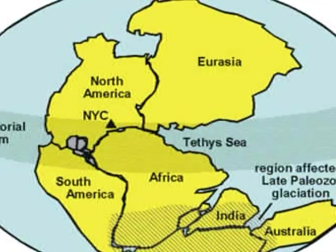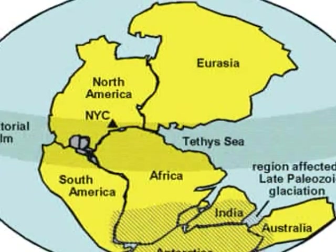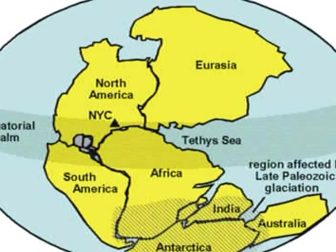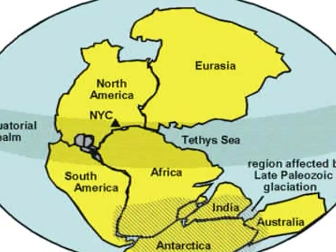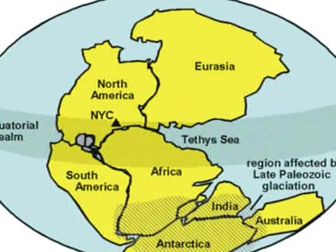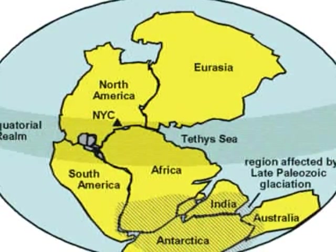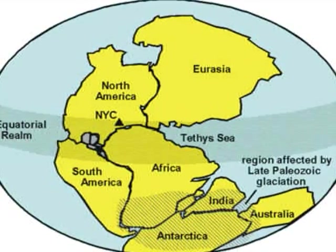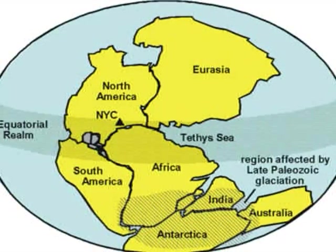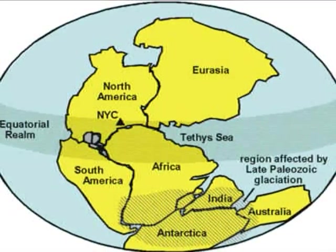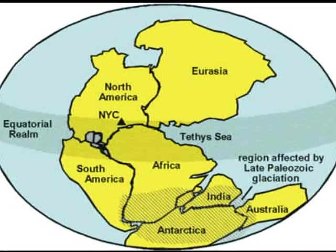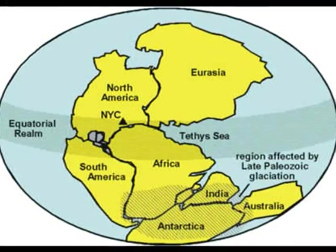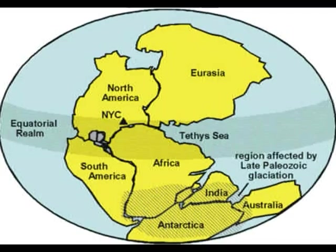Continental drift is the slow movement of the Earth's continents toward and away from each other. Alfred Wegener said that the continents drifted by flowing through the sea floor, and he also thought that the edges of the continents look like they fit together because they had once been attached as an entire landmass.